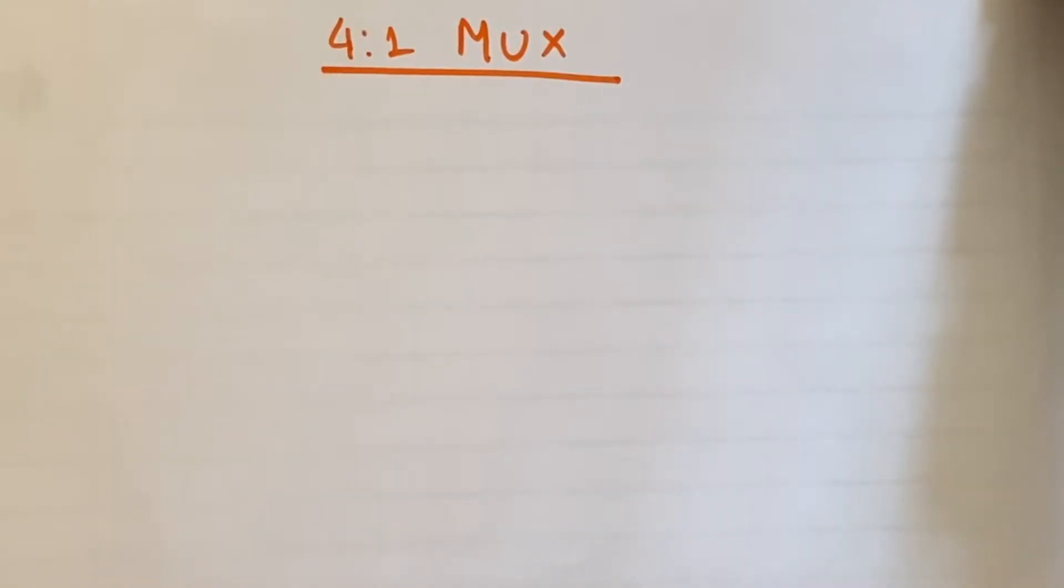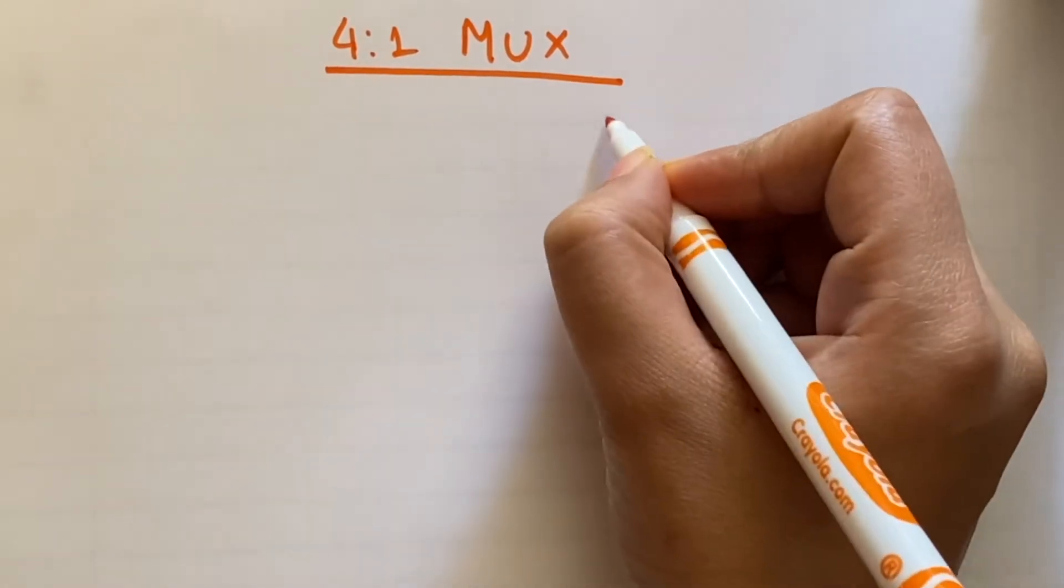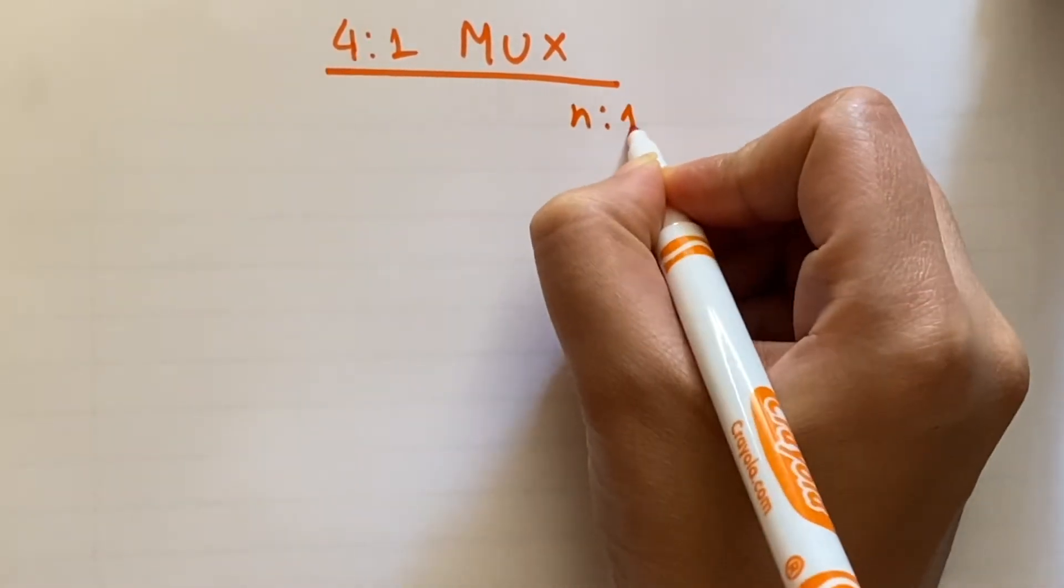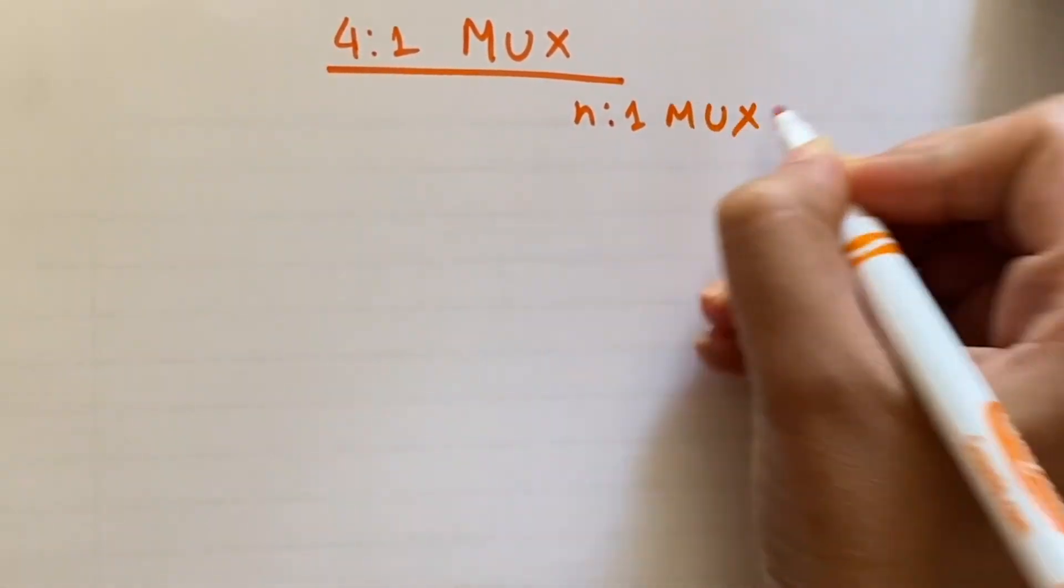Hey everyone, welcome to the channel. In this video we are going to learn about 4 is to 1 MUX, that is the multiplexer. So what 4 is to 1 multiplexer will do? Here n is to 1 MUX means...